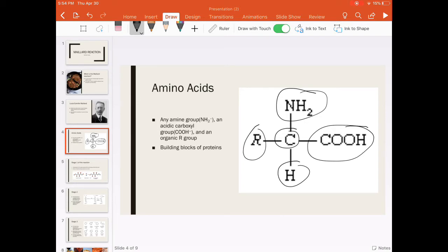The R group is what makes each amino acid unique, and it's just an unspecified compound. The picture displays the basic structure of an amino acid.